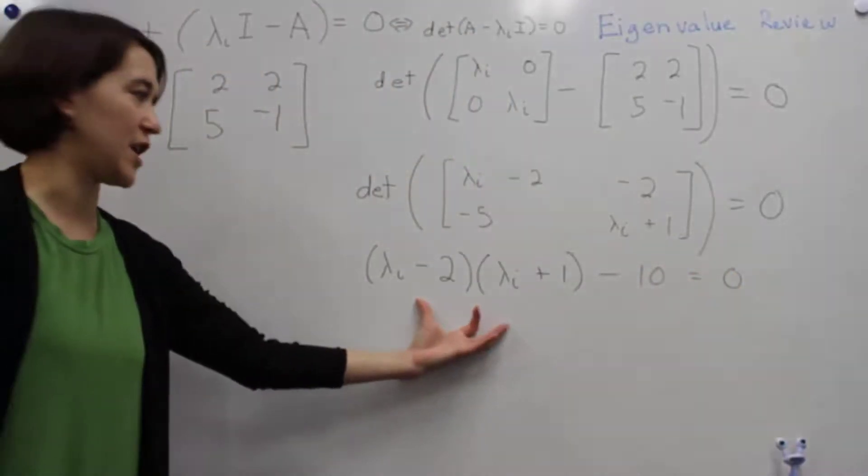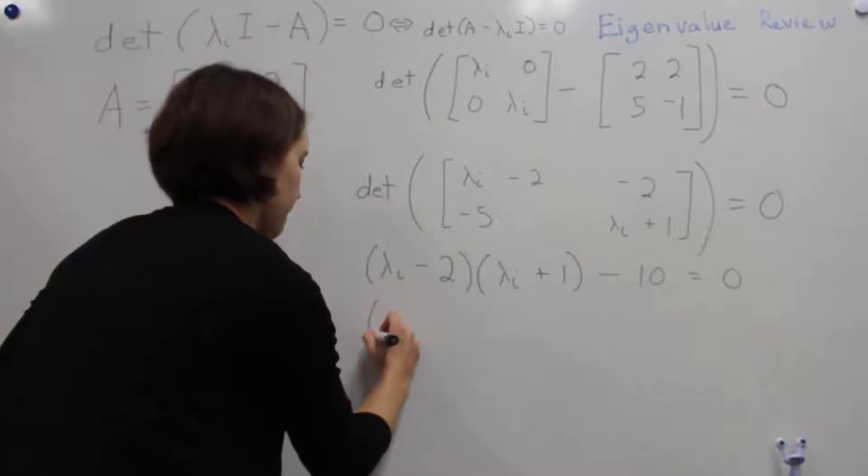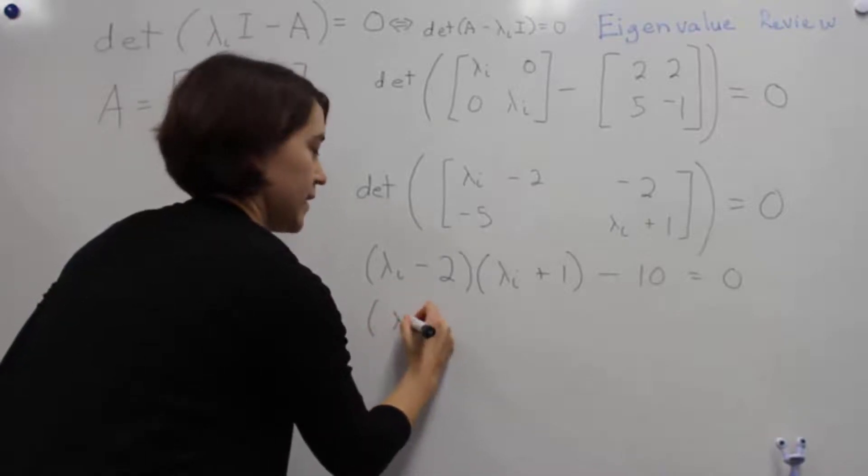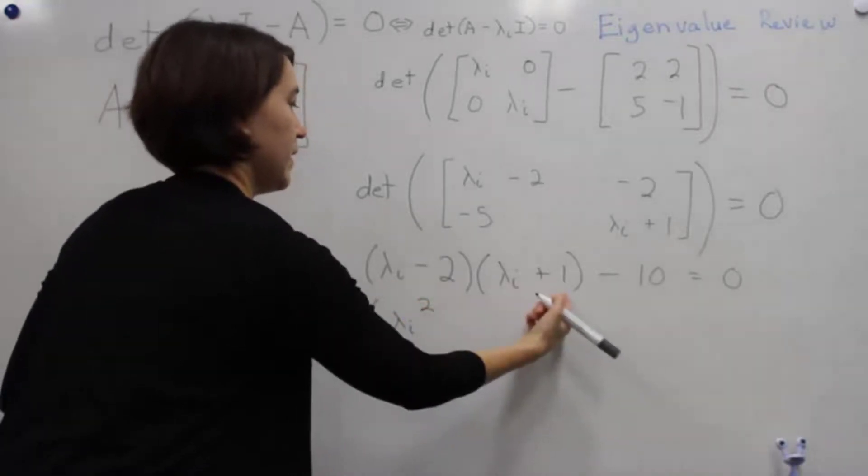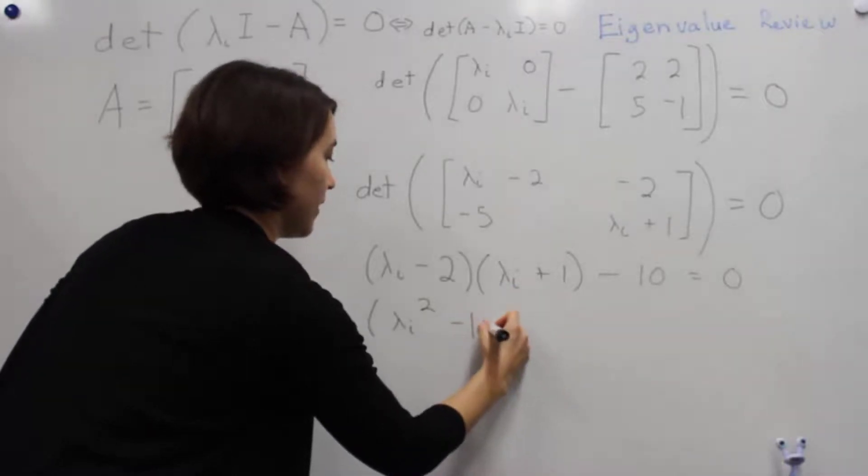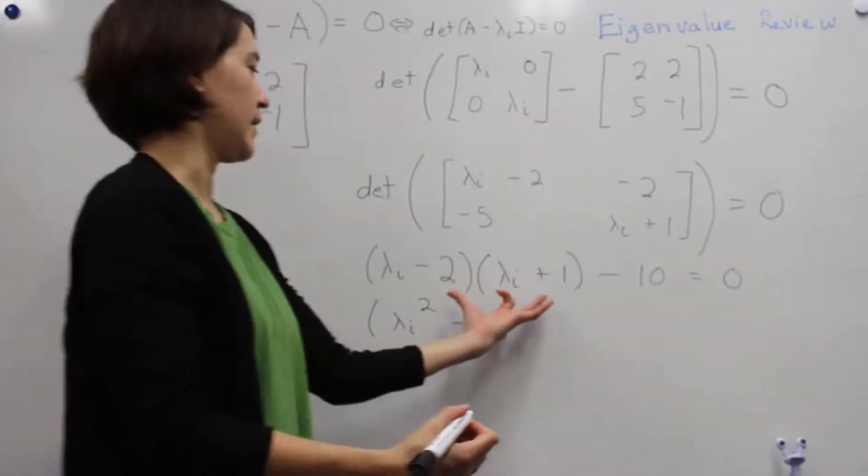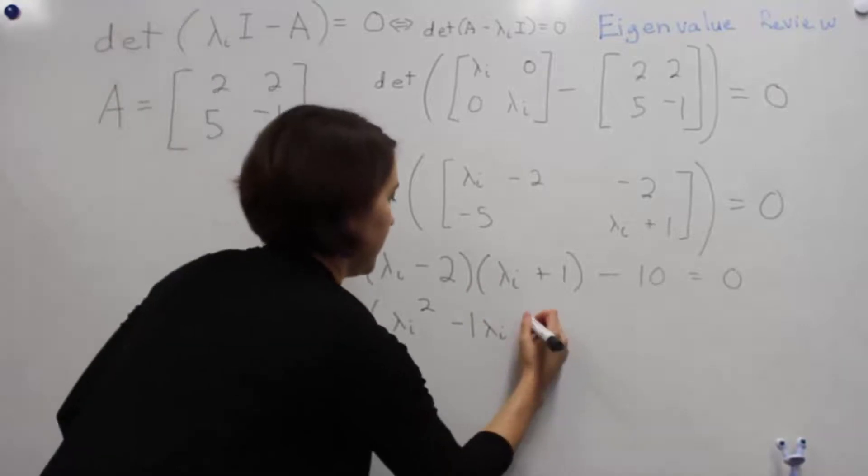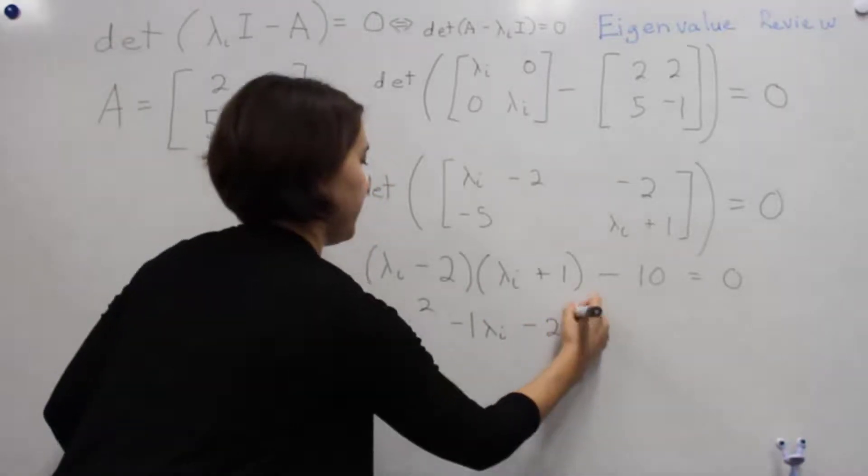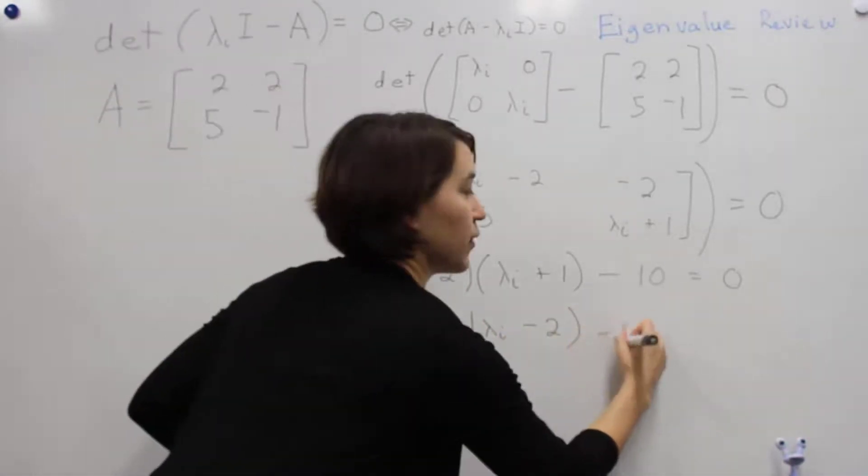So lambda minus 2 times lambda plus 1, and then minus 10, or equal to zero. We'll need to expand this expression out. We'll do lambda squared minus 1 lambda, and then multiply these two together—we get minus 2.